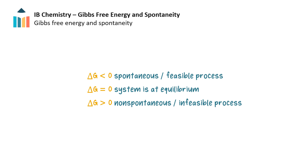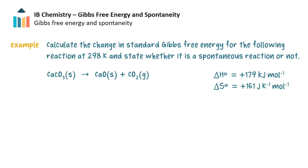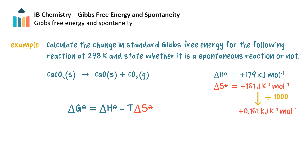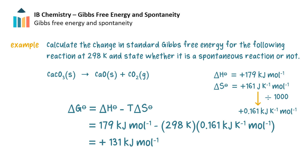Let's look at a problem using the Gibbs equation to deduce if a reaction under certain conditions is spontaneous or not. Calculate the change in standard Gibbs free energy for the following reaction at 298 Kelvin and state whether it is spontaneous or not. We have the standard enthalpy change, temperature, and standard entropy change, whose units we must convert to kilojoules per Kelvin per mole by dividing by 1000. Substituting and solving, we get positive 131 kilojoules per mole.